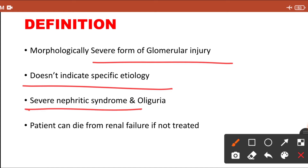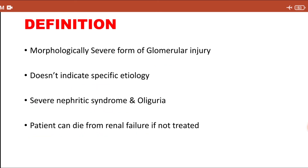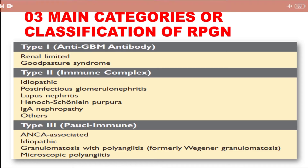RPGN is a severe nephritic syndrome. We know that in nephritic syndrome the patient can have oliguria. The patient can die from renal failure if not treated, so it should be treated immediately.